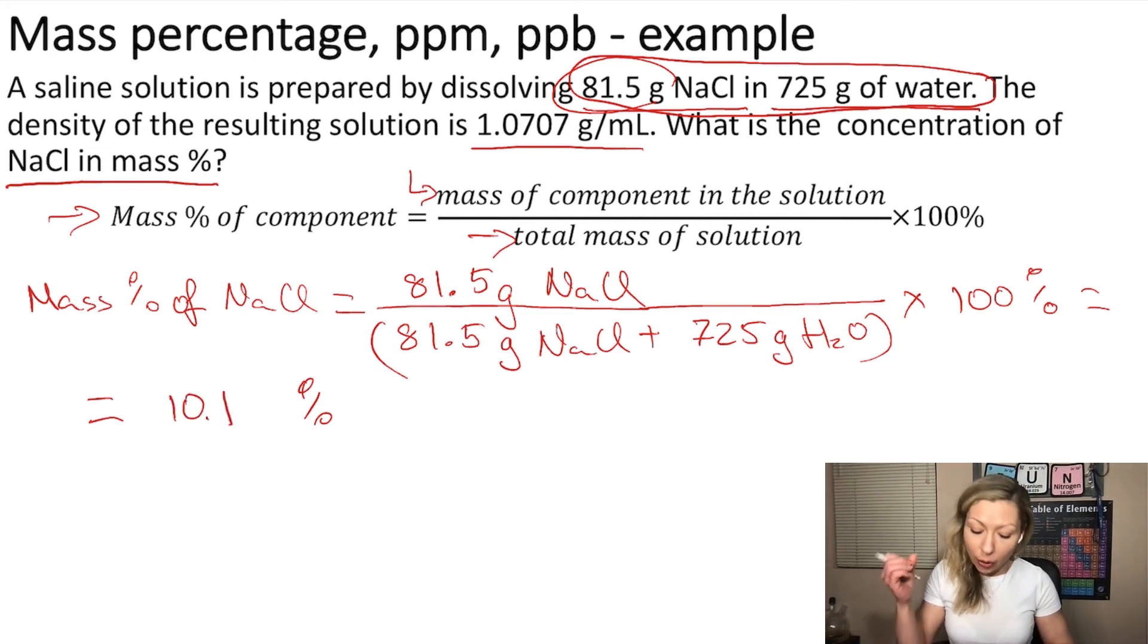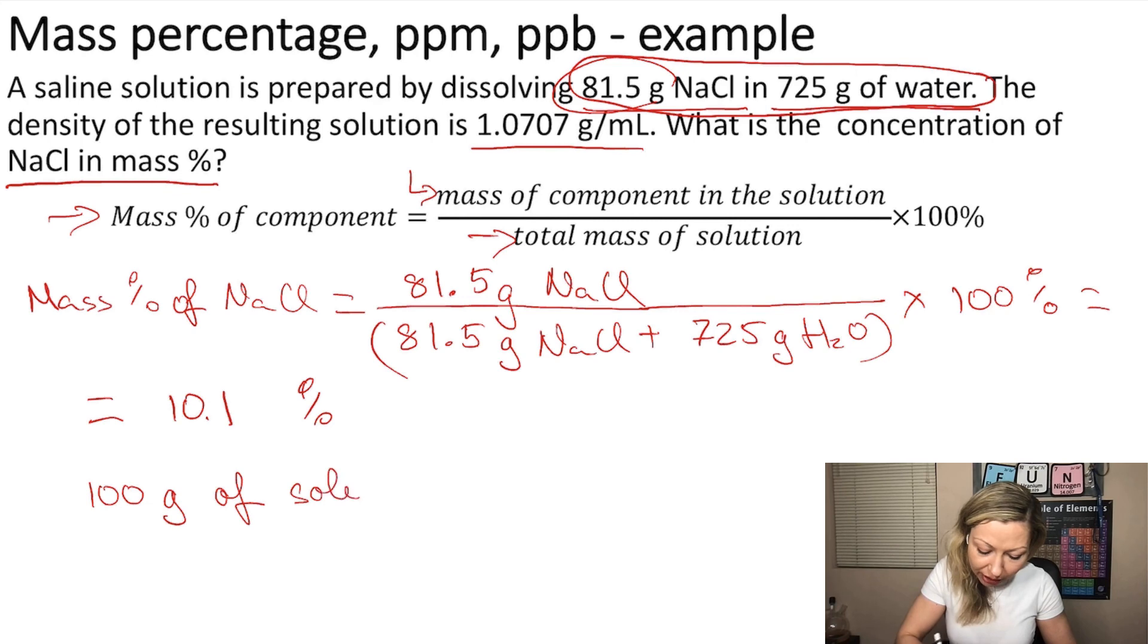So this also means that if you have 100 grams of solution, the saline solution, out of that 10.1 grams is going to be sodium chloride.